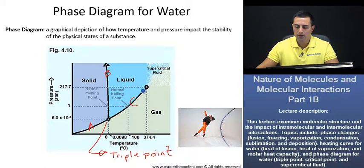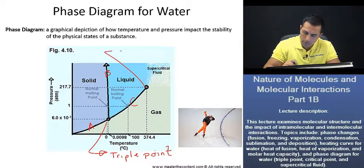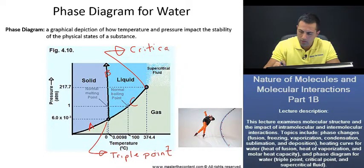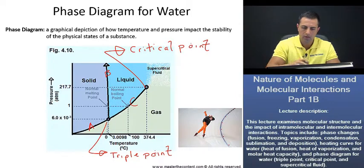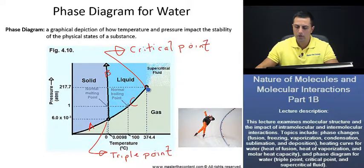Now, if we keep going up our line here, we reach this point here, that's known as the critical point. Now, the temperature at the critical point is the critical temperature, and the pressure is going to be the critical pressure. And furthermore, if we look here at the critical temperature, any pressure past the critical temperature is no longer going to be able to liquefy that gas.